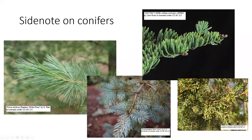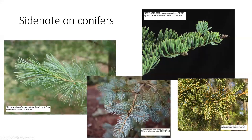Spruces and firs produce their needles singly — not in clusters. The needles of firs will detach from the stem and leave a circular little pad, where the needles of a spruce tree will leave a little stalk. Then we have other conifers that may have scale-like foliage or awl-like foliage. Our eastern red cedar, Juniperus virginiana — one of our few native evergreen species in most parts of Illinois — has foliage that's not really needles and not really leaves, but something in between, so worth taking a closer look.